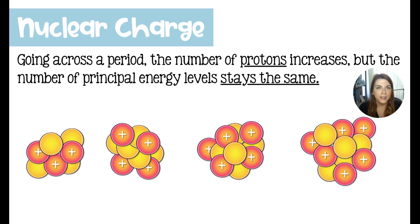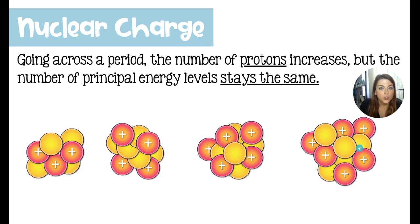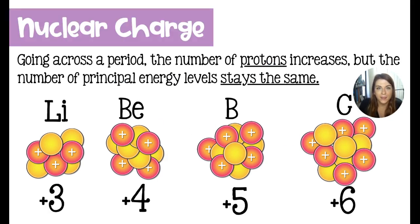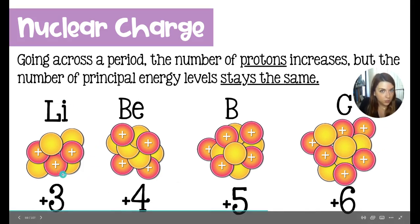Going across a period is where things are a little less intuitive, and that is due to a concept called nuclear charge. Looking across a period — lithium, beryllium, boron, and carbon — the number of protons is going to increase and the number of principal energy levels stays the same. When we measure nuclear charge, we're just counting the number of protons. So lithium's nuclear charge is +3, beryllium's is +4, and so on.